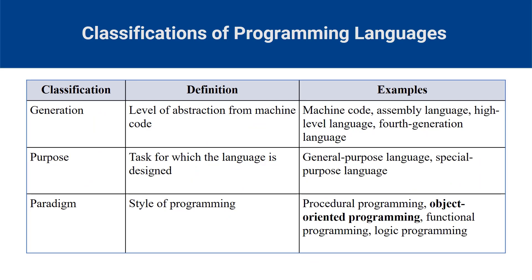Categories of programming languages. Programming languages can be categorized in a variety of ways based on different factors. Some of the most common criteria include generation, purpose and paradigm. One way to categorize programming languages is by generation, which reflects the major improvements that each generation made over the previous one. Programming languages can be classified into four categories based on their generation: machine language, assembly language, high-level language and fourth-generation language.